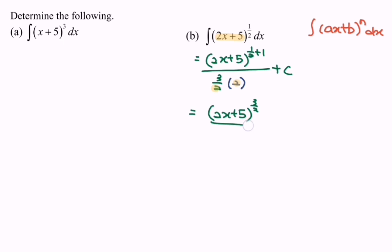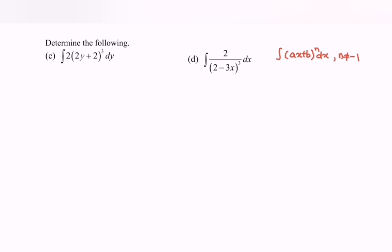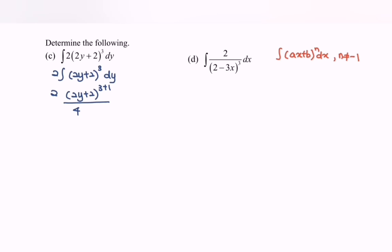And we will have over 3, plus c. For part c, we have 2 multiplied by the integral of (2y + 2) to the power of 3 with respect to y. Integrate: (2y + 2) to the power of 3 + 1, over 4. Do remember to differentiate the internal function, and we get 2, so multiply by 2, plus c. Simplified: (2y + 2) to the power of 4 over 4, plus c.